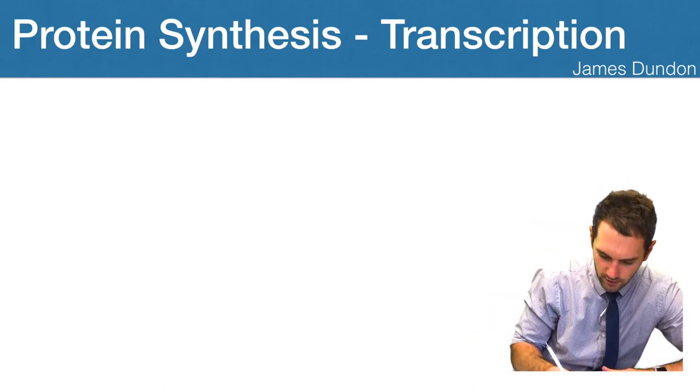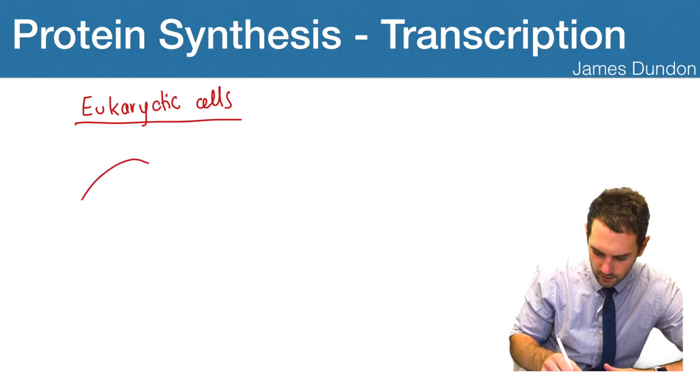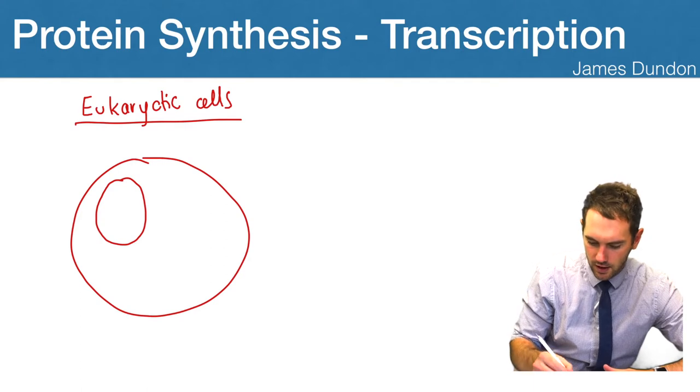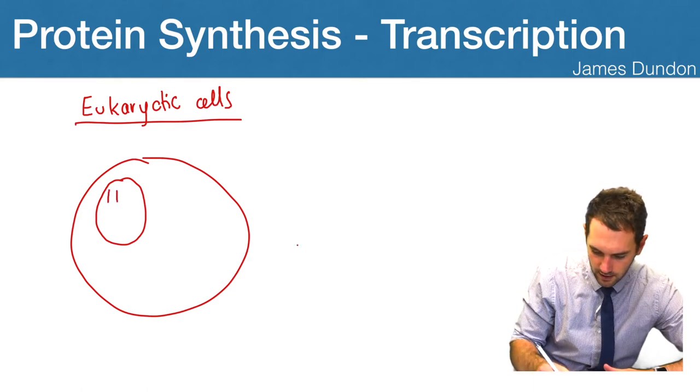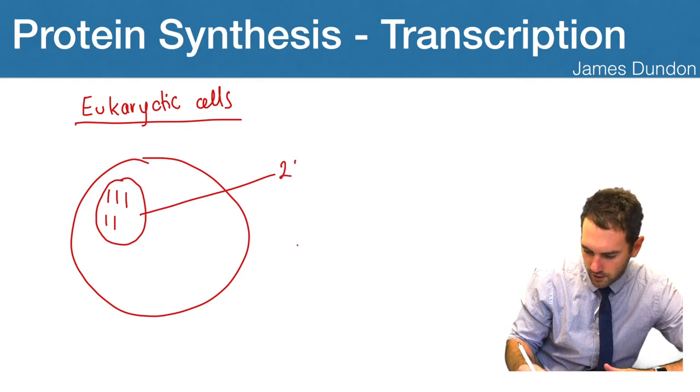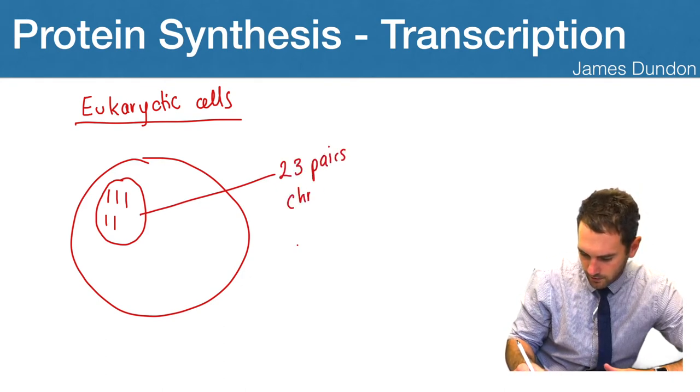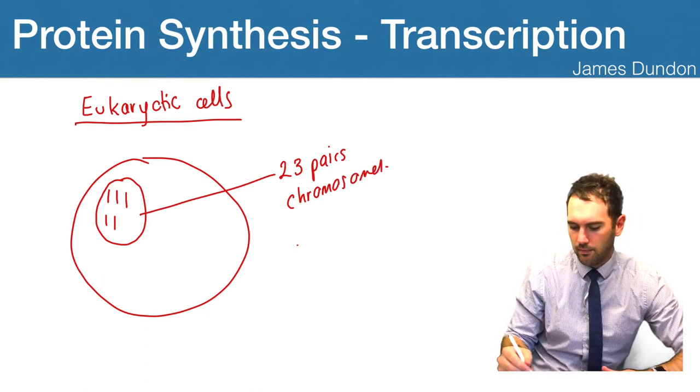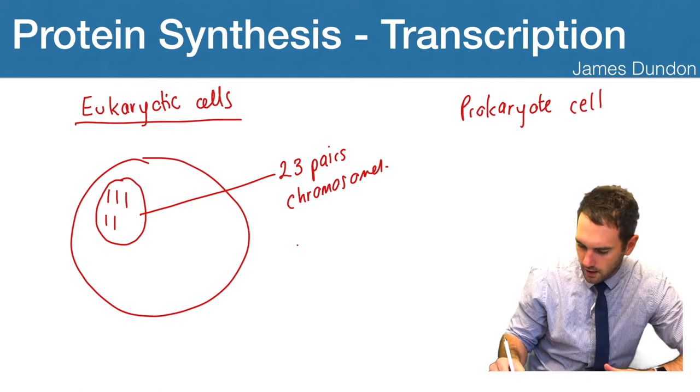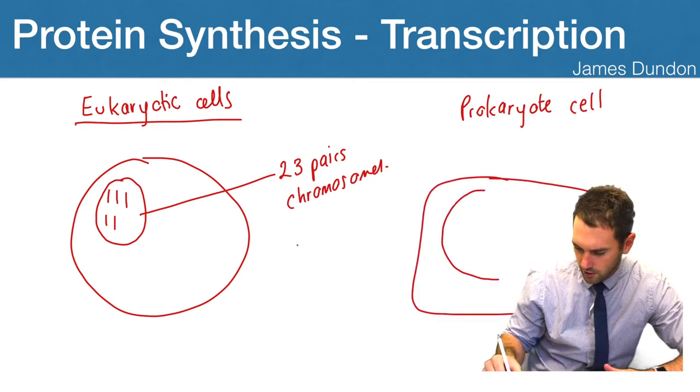So in eukaryotic cells, we have a cell and then we have a nucleus. And inside that nucleus is linear DNA. And in a human, we have 23 pairs of chromosomes. But in a prokaryotic cell, we just have a single circular chromosome.